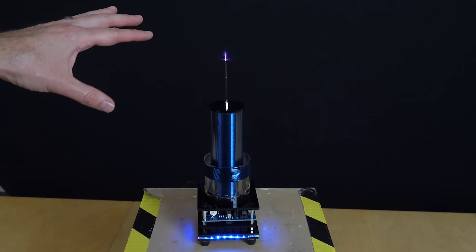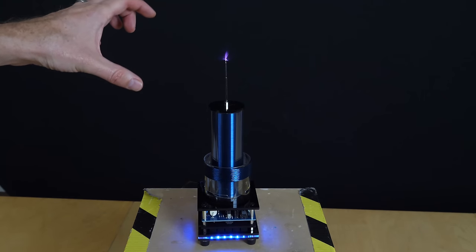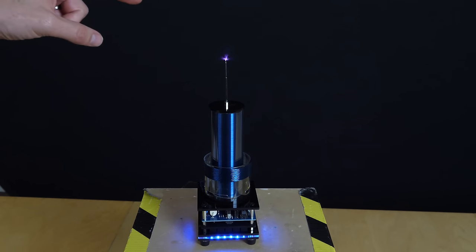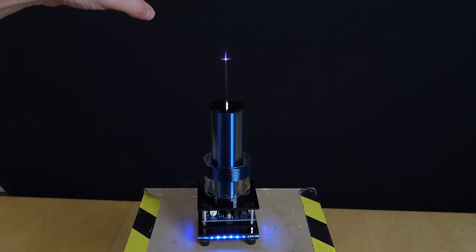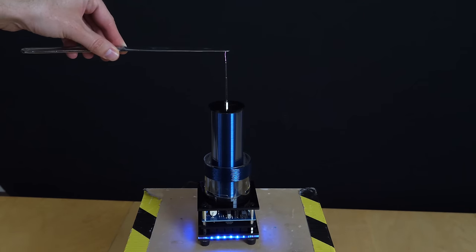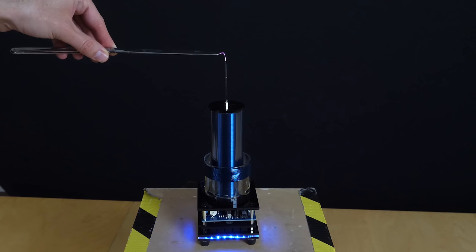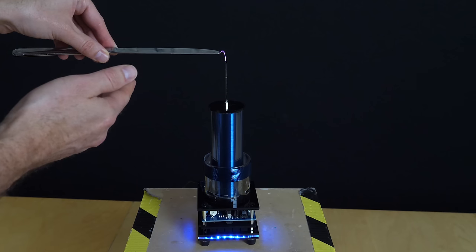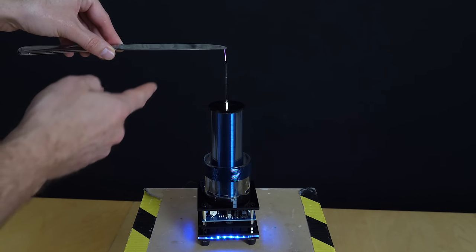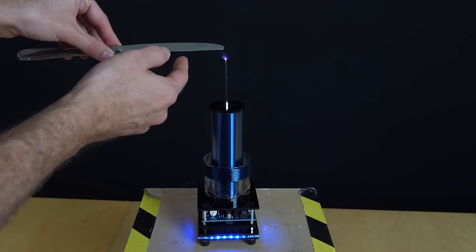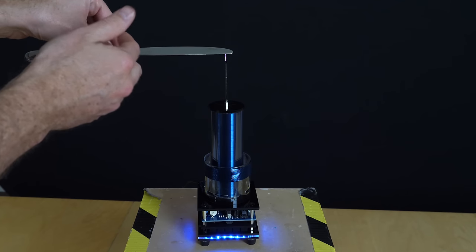So this means that even though this Tesla coil is producing voltages in the tens to hundreds of thousands of volts range, it means that I can touch it and not get shocked. So I can even touch it with a conductive knife here, and I still don't get shocked. So that doesn't mean that there's no current going through me, but what it means is that because this is at such a high frequency range, all of the electrons are not going deep into me, but they're only transferring on my skin.